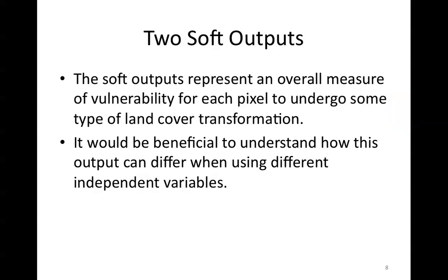The soft output is one of two outputs of the land change modeler. It represents an overall measure of vulnerability for each pixel to undergo some type of land cover transition. It would be beneficial to understand how this output can differ between models. This video will demonstrate one way of evaluating and comparing different soft outputs.